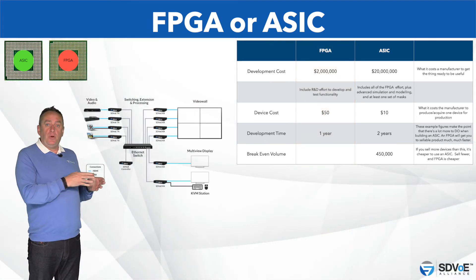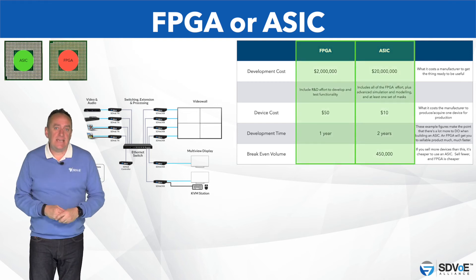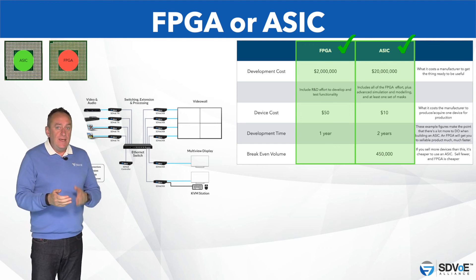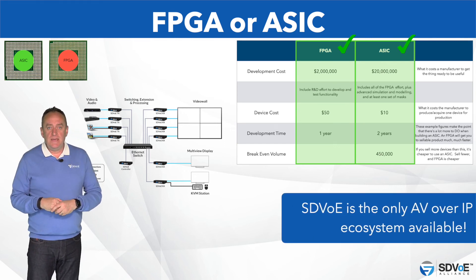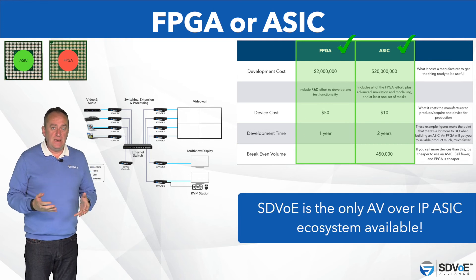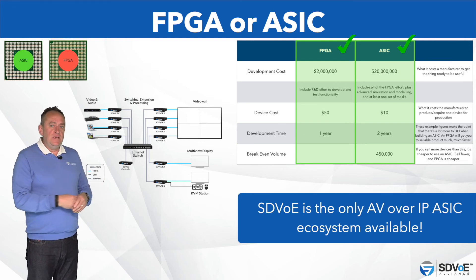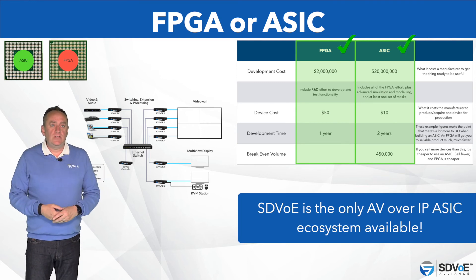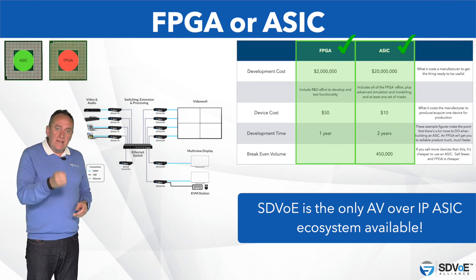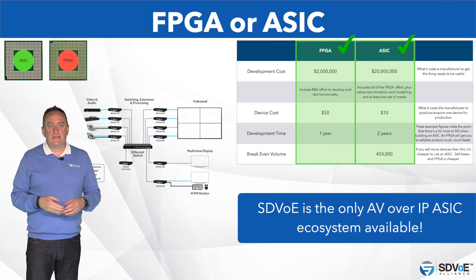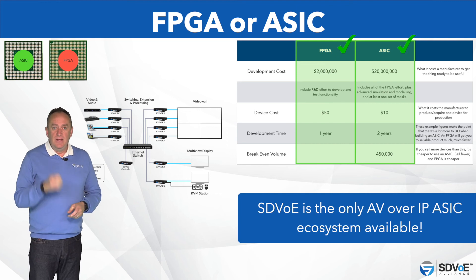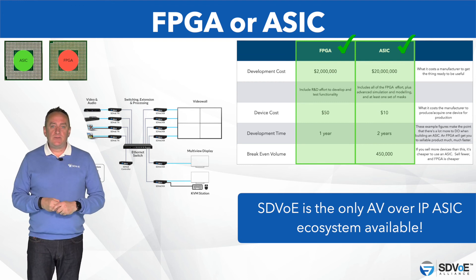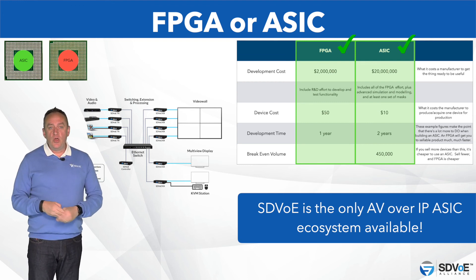SDVoE offers products based on FPGA and ASIC, helping to keep a broad array of Alliance members supplied with chips. In fact, it's the only AV over IP ASIC ecosystem available. As the demand for FPGA chips continues to exceed the global supplies available, it's worth considering that the pro-AV market has to wait in line with far bigger electronics market sectors for FPGA chips, often having to wait over a year for availability — while SDVoE ASIC chips are available to manufacturers right now.